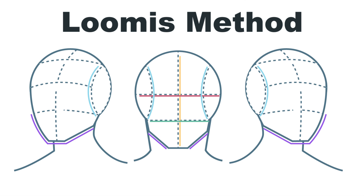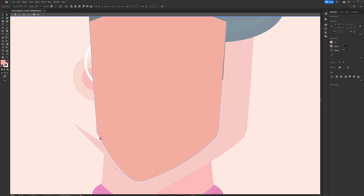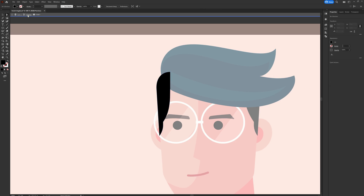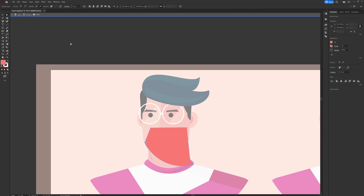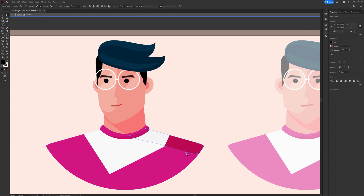The same is true for the line that is bisecting the head. This is also the line crossing through the mid portion of the eyes, touching the tip of the nose, and the mid portion of the mouth. This is how you can move the nose, eyes, and mouth while rotating sidewise.